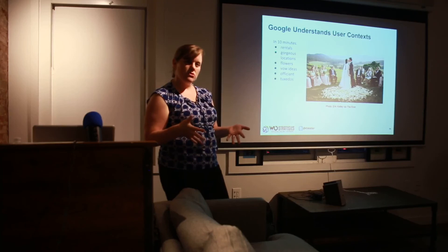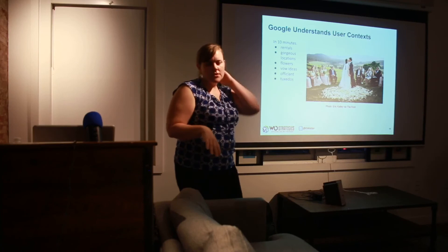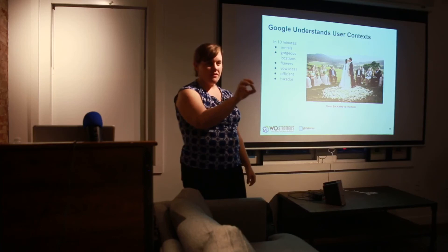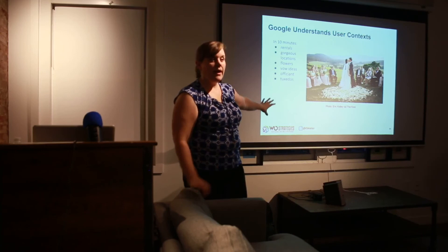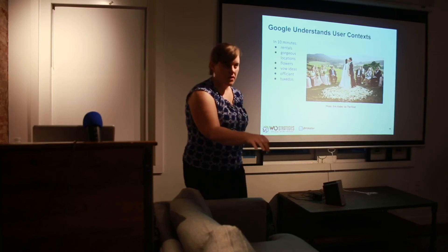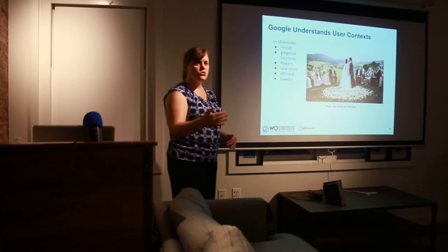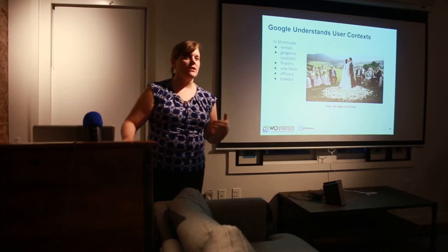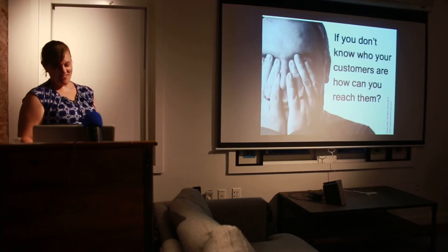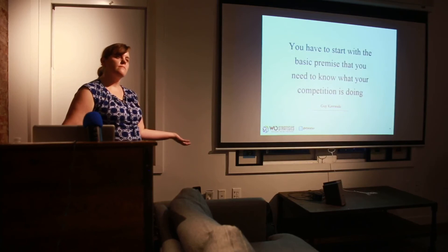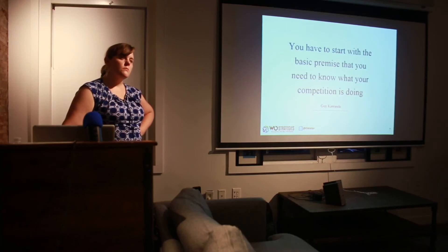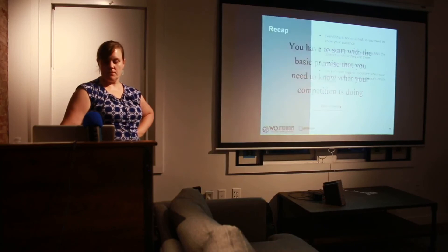Google can pivot in ten minutes and understand a new context for you and change all the search results. For example — I just told you I have kids and I'm married. Pretend suddenly my boyfriend proposed to me. In ten minutes, Google can figure out that life event happened and start pivoting — so if I start looking for rentals, it will be wedding rentals; if I'm looking for trips to Bermuda, it will be honeymoon vacations. It will save that future context for you. You need to know your customers in order to reach them, and you need to know what your competition is doing — maybe they've got an SEO team of seven, depending on your industry.